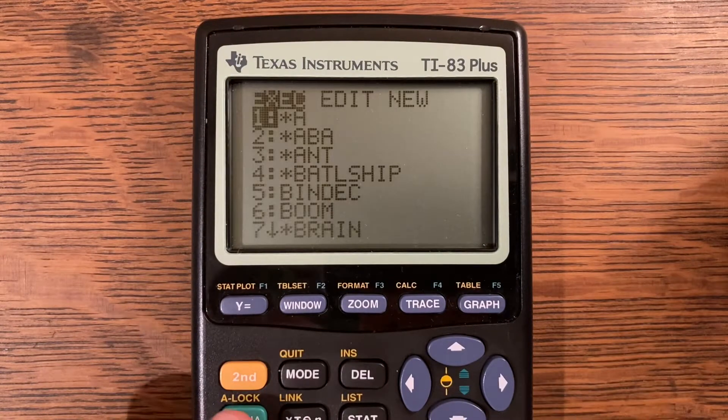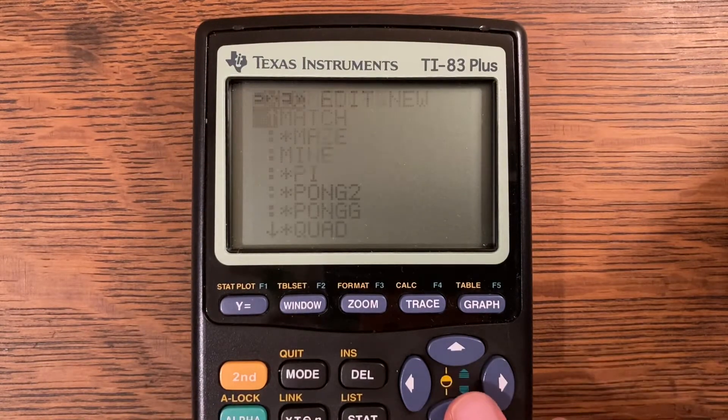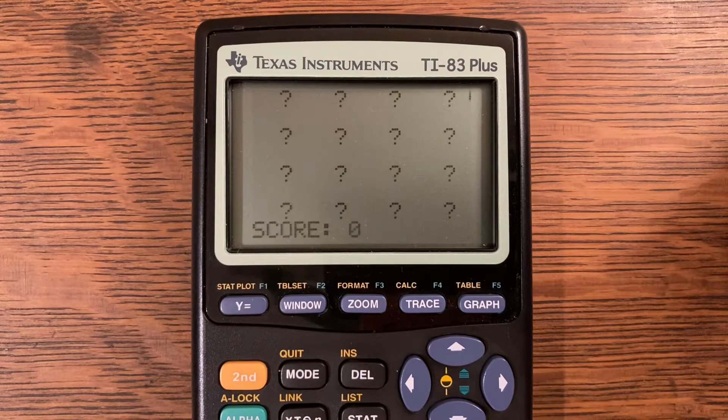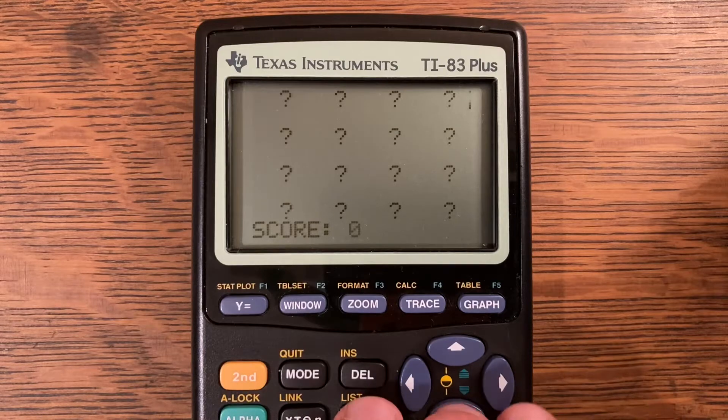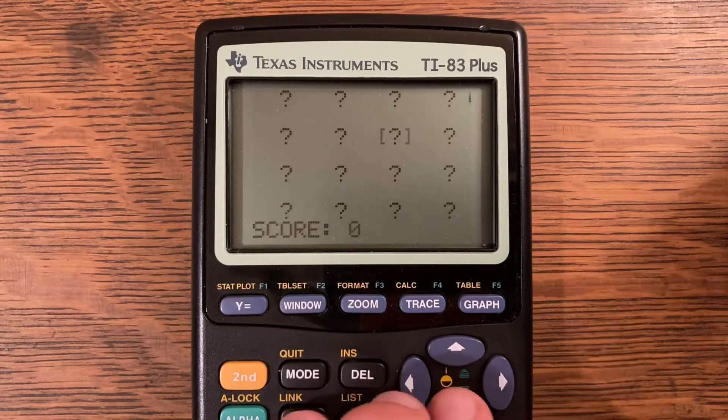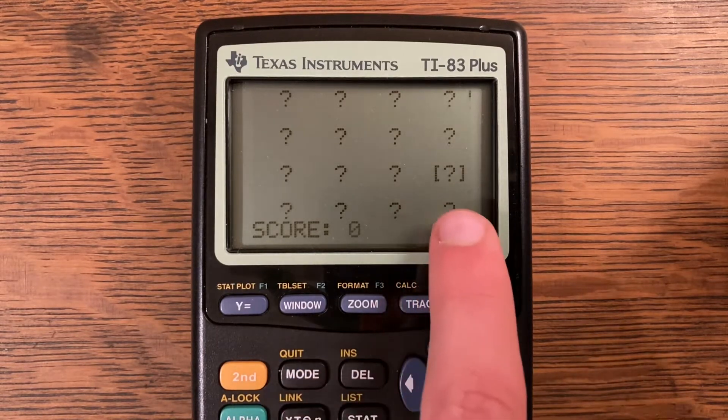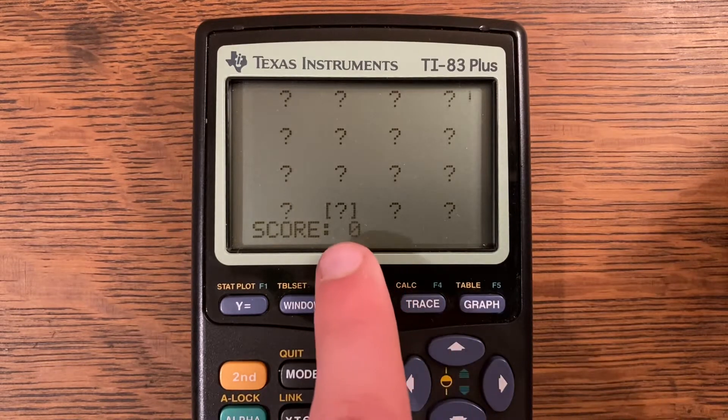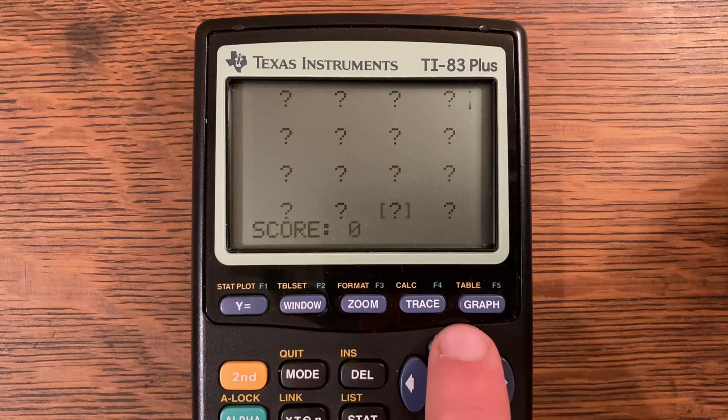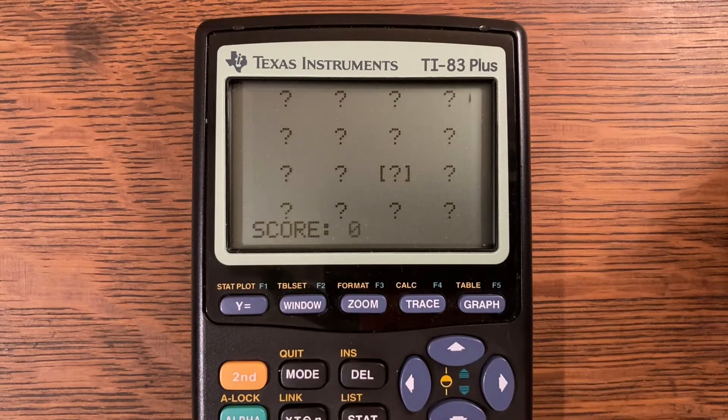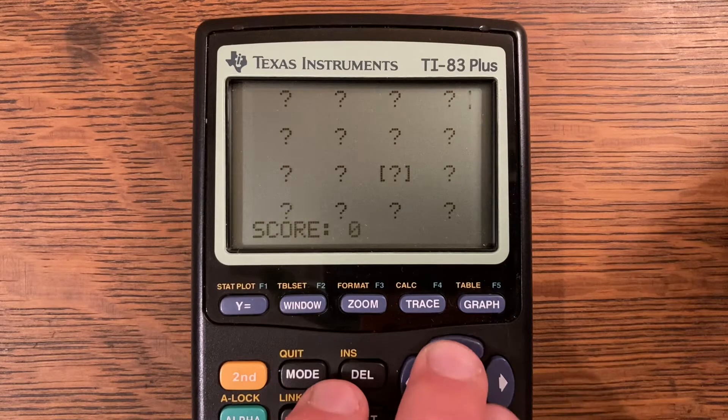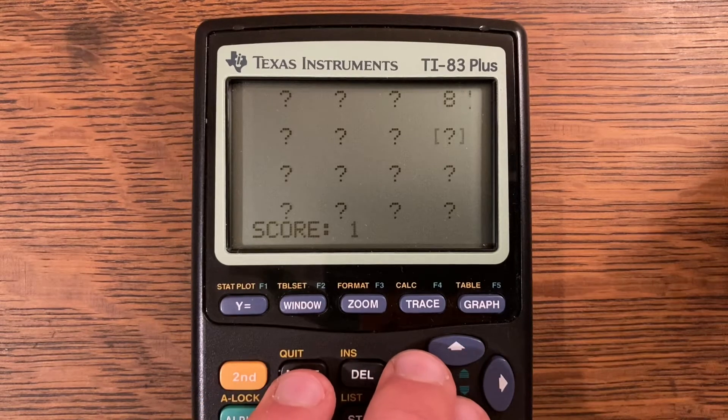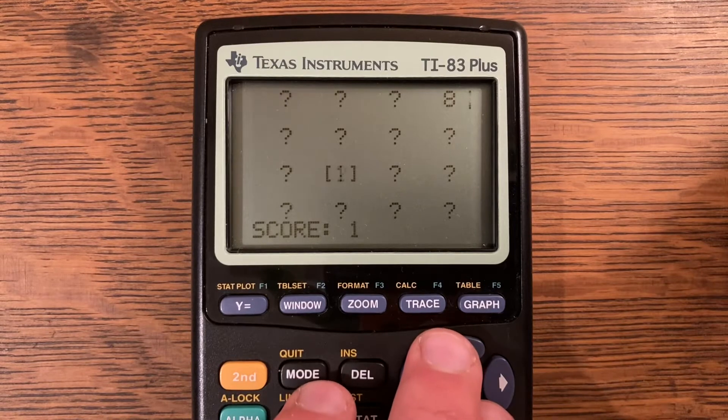I'm going to run program Match. I did call it Match instead of Memory just to save a couple of bytes, but you can call it whatever you'd like. Right away you can start moving around. The brackets show wherever you're selecting and the question marks are the different numbers hidden underneath. I like to pick one of the top corners, and it is an eight.